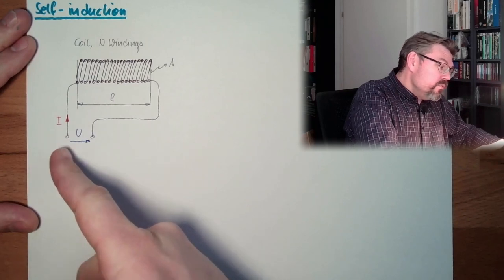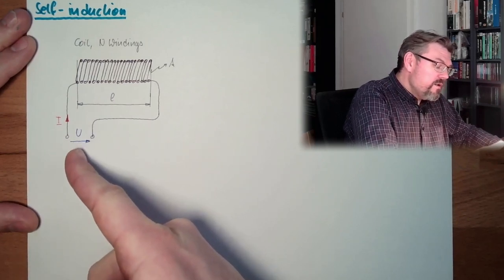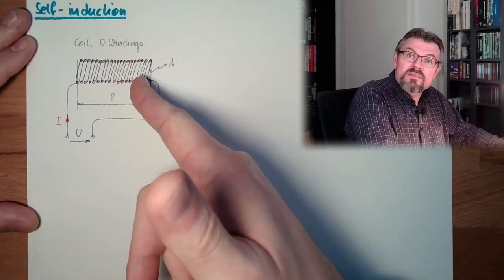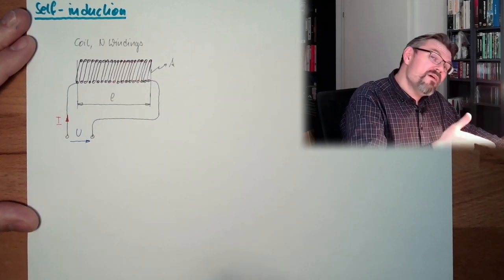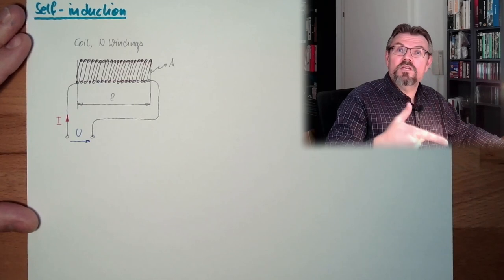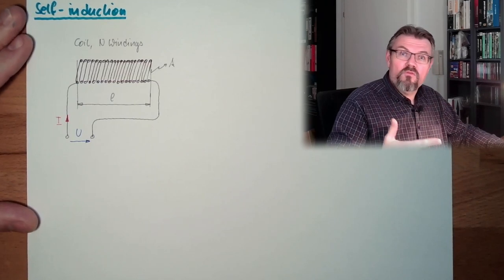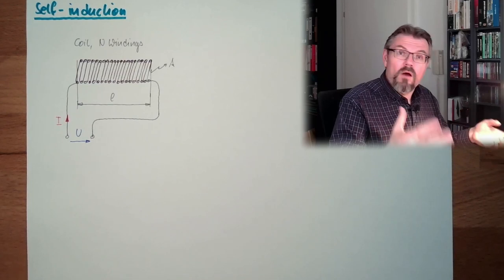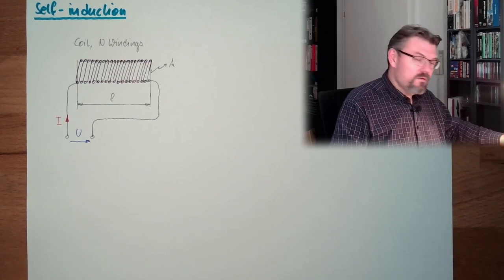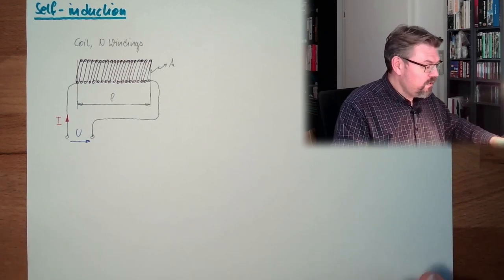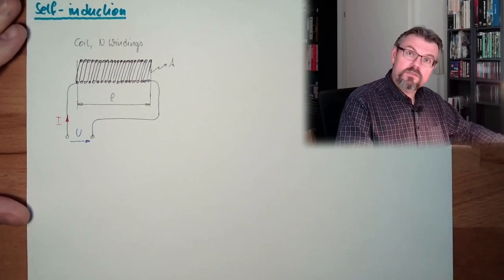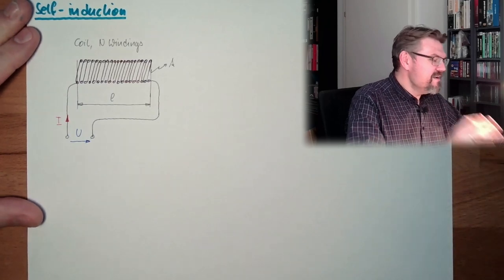Because, actually, when we put on a voltage there, there is a changing magnetic field inside. And this would have influence, because the changing magnetic field can come from somewhere, and also from the current running through our coil itself. Coil. Not coal. Hopefully not too much current, because then it's a coal. Right now it's still a coil.